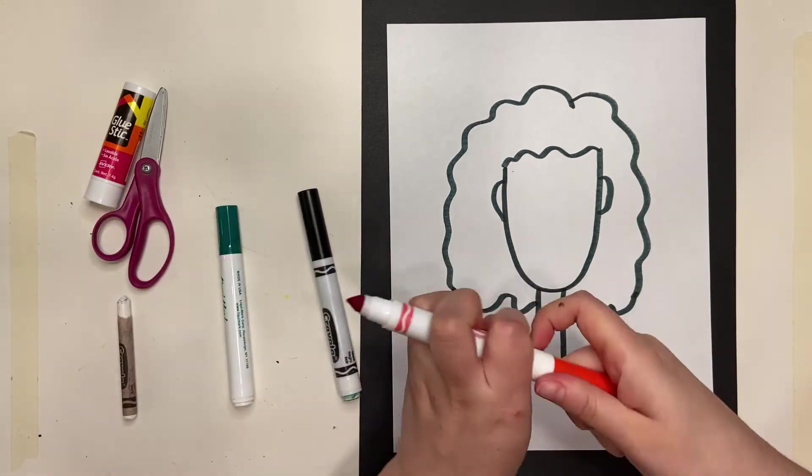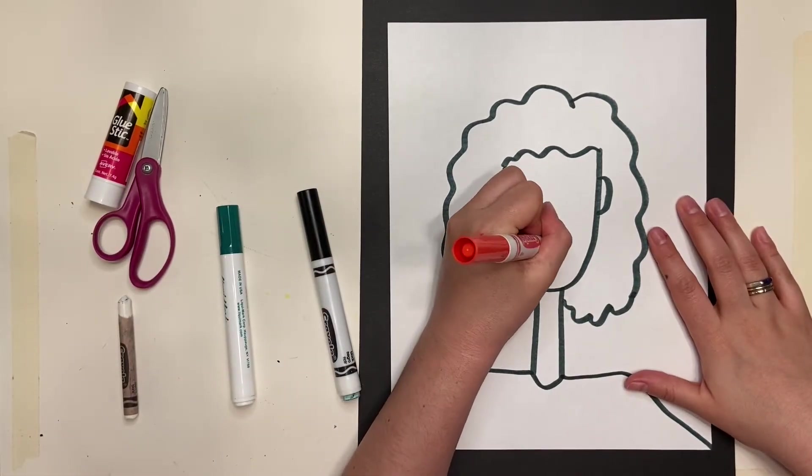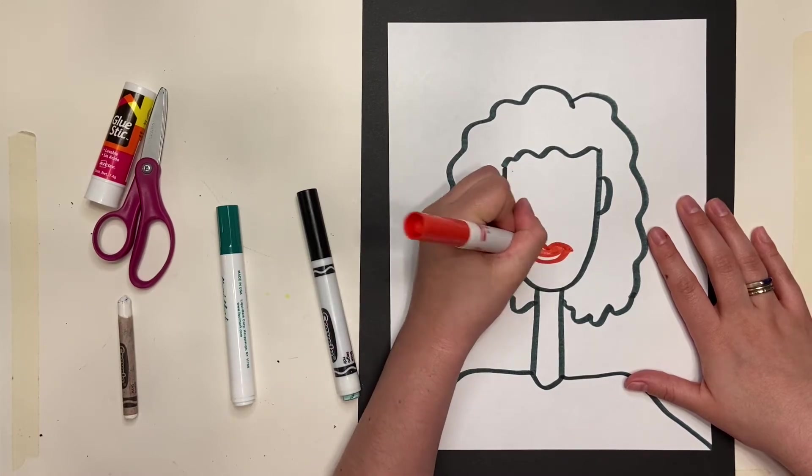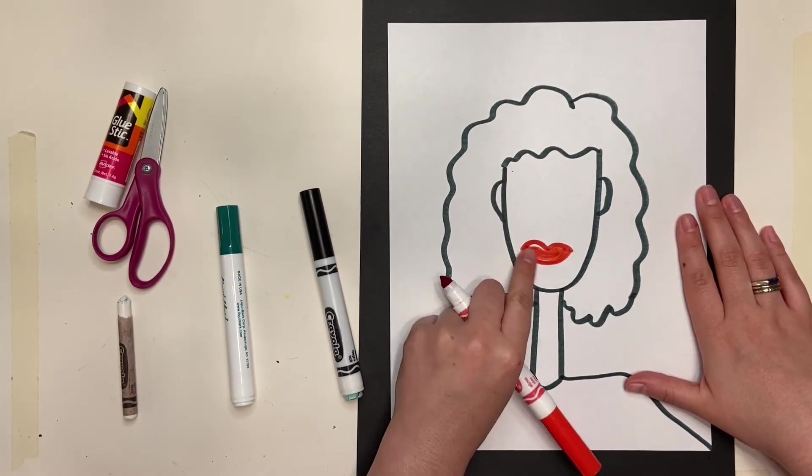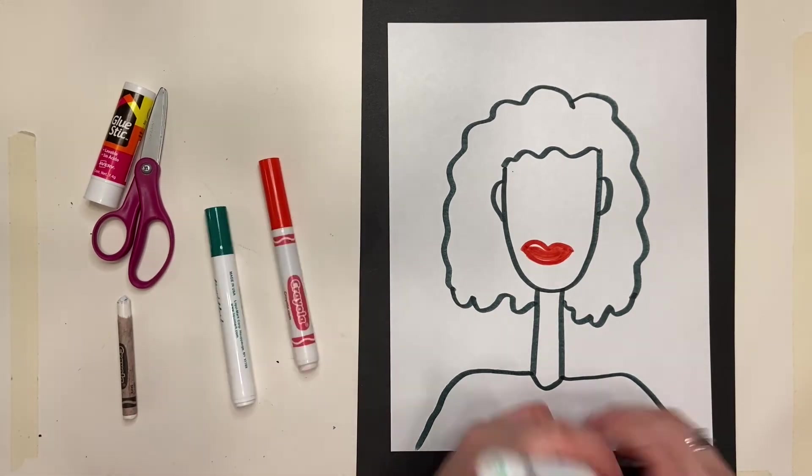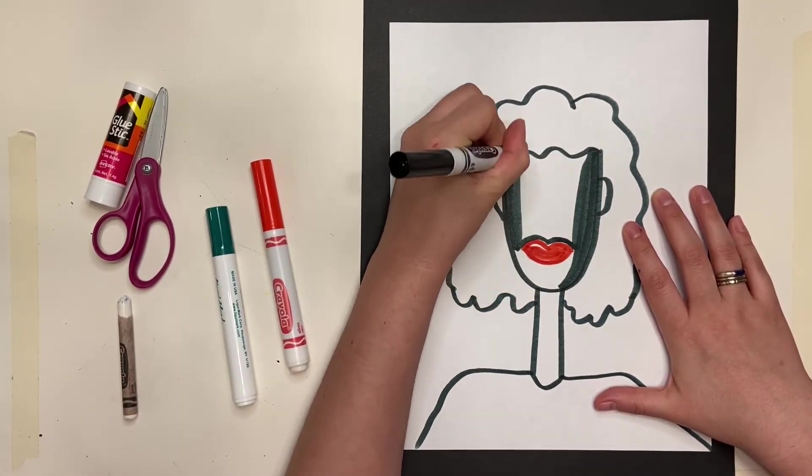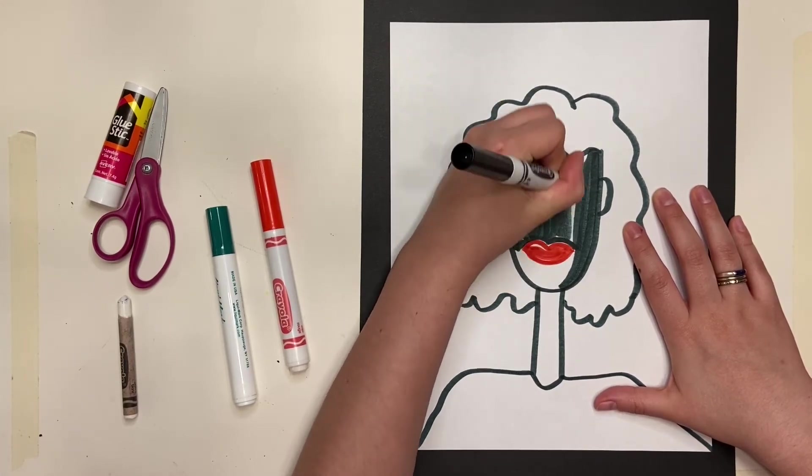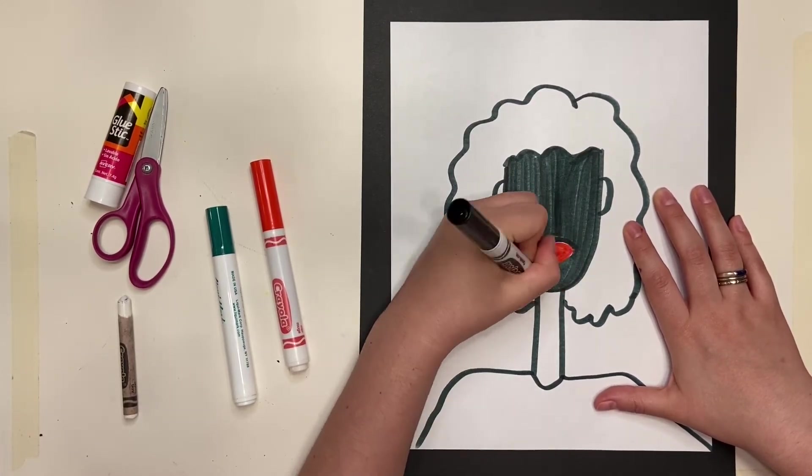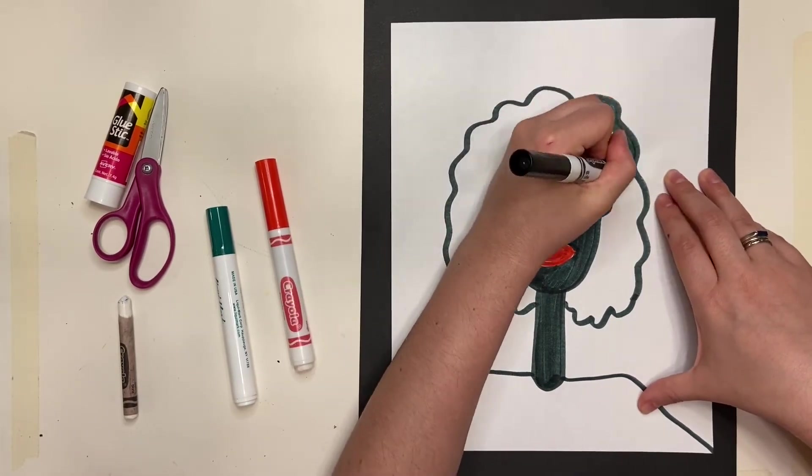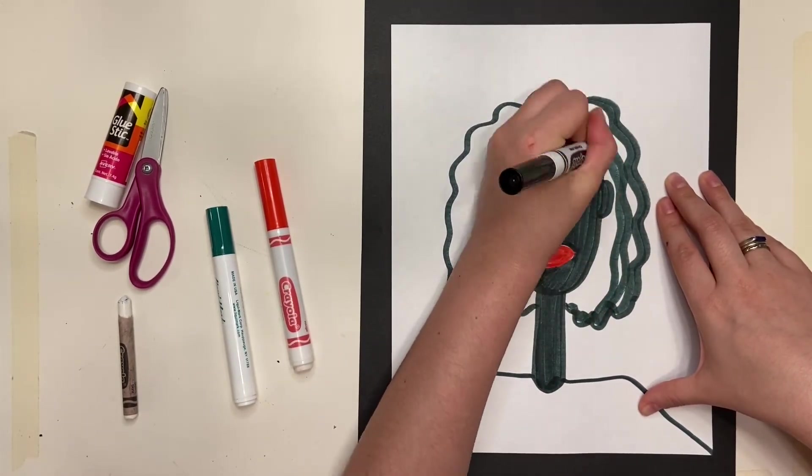And now with my red marker, I'm going to add the lips. And I'm going to try to keep a little bit of space that's white for my highlight. And now, using my black marker again, I'm going to start coloring everything in. So this might take a little bit of time. But if you don't have black paper, you can still do this project using either a black marker or a black crayon.